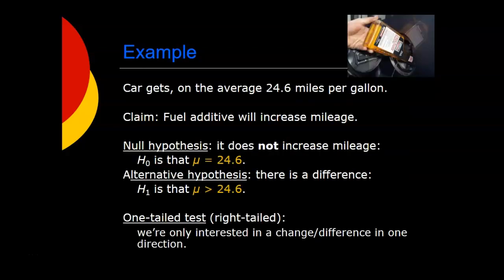Okay, another situation. Another example. Let's say that a particular kind of car is known to get, on the average, 24.6 miles per gallon of gasoline. And you've developed a new fuel additive that you claim will increase mileage. So if the car uses this new additive, it's going to get better than 24.6 miles per gallon. So in this situation, the null hypothesis would be that there's no difference. The additive doesn't make any difference. So the average mileage for cars using the additive is still going to be 24.6 miles per gallon. The alternative hypothesis would be that it does make a difference. That the average mileage for cars using this additive is more than 24.6 miles per gallon.